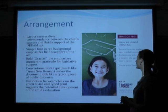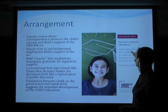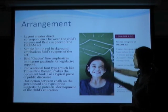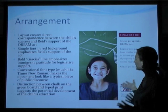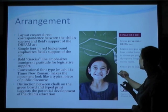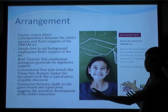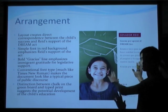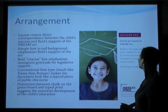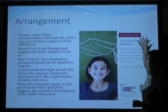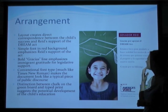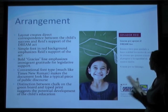The arrangement of the piece is interesting. It creates a correspondence between the technical vocabulary of legislation on one side and the child-oriented school environment on the other. If this child succeeds in school, then perhaps the legislation made that happen, and the one-to-one correspondence in the advertisement makes that parallel possible. The simple font on the red background emphasizes Harry Reid's support of the piece. The bold text emphasizes immigrants' support for the legislation, and the conventional font type looks like what you would see in a newspaper, asserting the legitimacy of the rhetoric on that side of the page.